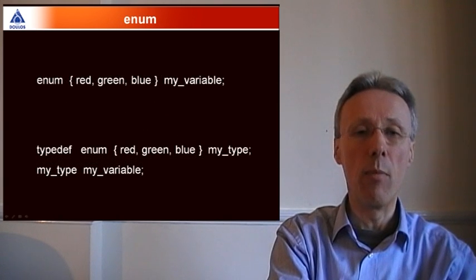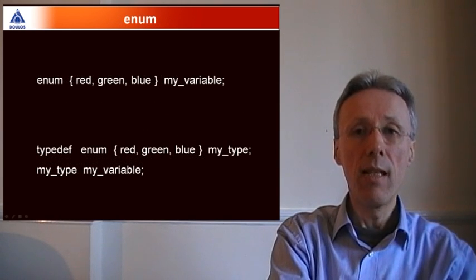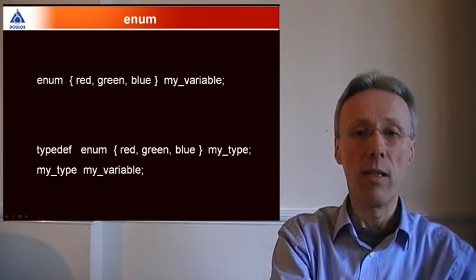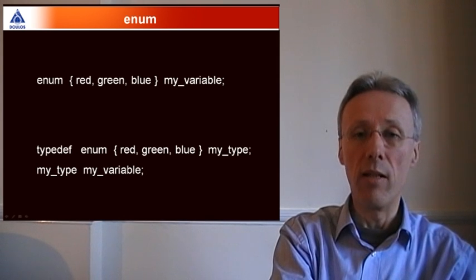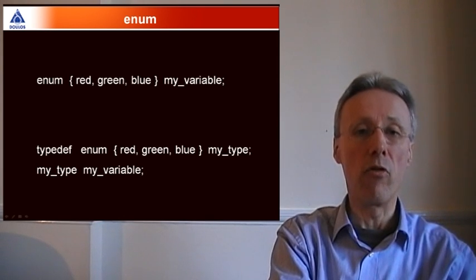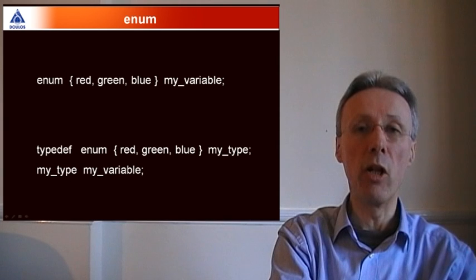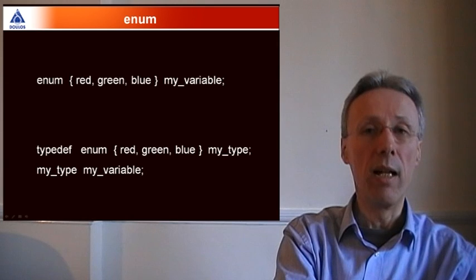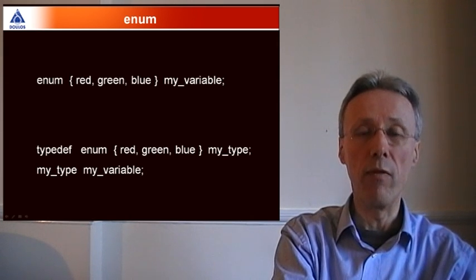Let's start with an example of an enum. In SystemVerilog, you can define an enum variable as shown by the top example. Here, my variable is an enumeration that can take one of the three possible values: red, green, and blue.